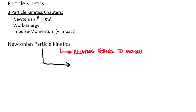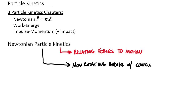Particle kinetics means a couple of different things. It could mean tiny bodies of mass, but really there are no physically tiny bodies of mass that exist. The kind of bodies we're dealing with for particle kinetics are non-rotating bodies with concurrent forces. I'll bring up an equation to justify why this works in order to treat these bodies as particles.